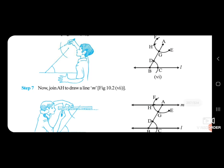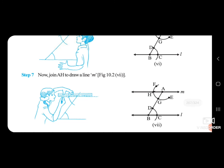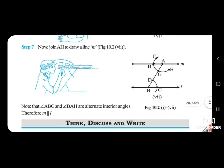Step 6: Name the point H where the arc cuts EF. Step 7: Join A to H to draw line M. Note that angle ABC and angle BAH are alternate interior angles, therefore M is parallel to L.